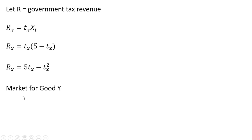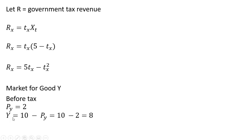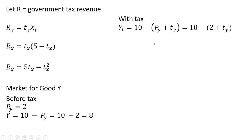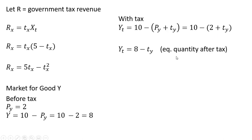Now let's do the same for the market for good Y. Before the tax, supply is perfectly elastic at $2, meaning consumers will purchase 8 units at equilibrium. With the tax, given the perfectly elastic supply, consumers will be paying 100% of the tax. We can calculate the quantity purchased with the tax, and simplifying, we get the equilibrium quantity after the tax.